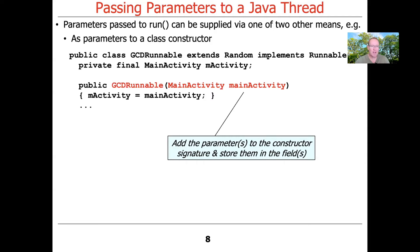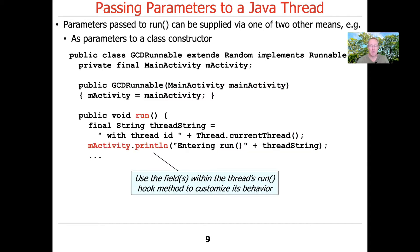And it stashes that field away in the body of the constructor. So we have a parameter, we can pass in the activity, that activity gets stored in the field. And it's a final field, and that has certain properties with respect to concurrency, which we won't go into now, but remember that.